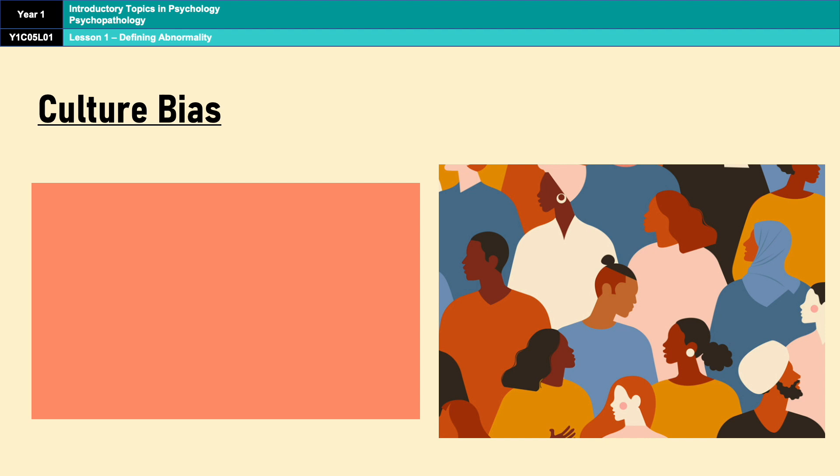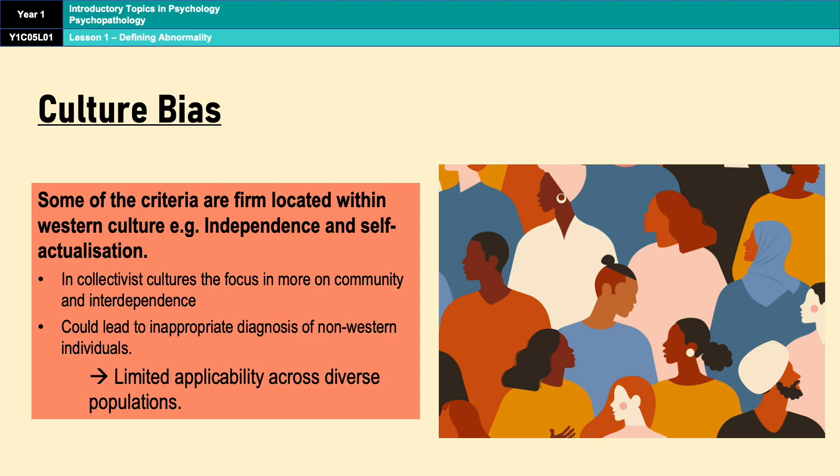However, a limitation of the definition is culture bias. This definition is based on criteria that reflect Western ideals of psychological well-being, such as autonomy, self-actualisation, and individualism. Jahoda presents these criteria as ideal mental health regardless of where you are in the world. However, different cultures may have different beliefs surrounding the importance of these concepts. For example, in collectivist cultures, the emphasis is on community, interdependence, and social harmony rather than individual achievement and independence, which could lead to the inappropriate diagnosis of individuals from non-Western backgrounds. Therefore, while the definition tries to provide a comprehensive view of psychological well-being, its focus on Western values limits its applicability across diverse populations.